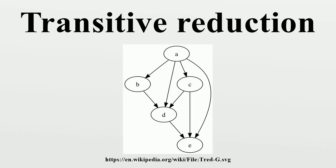If a given graph is a finite directed acyclic graph, its transitive reduction is unique and is a subgraph of the given graph. However, uniqueness is not guaranteed for graphs with cycles, and for infinite graphs not even existence is guaranteed. The closely related concept of a minimum equivalent graph is a subgraph of the given graph that has the same reachability relation and as few edges as possible. For finite directed acyclic graphs, the minimum equivalent graph is the same as the transitive reduction.